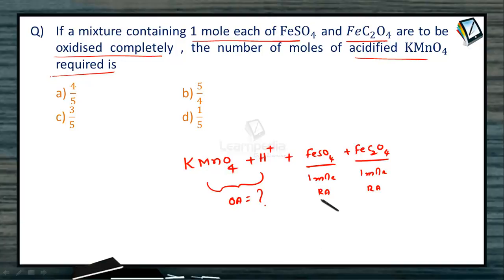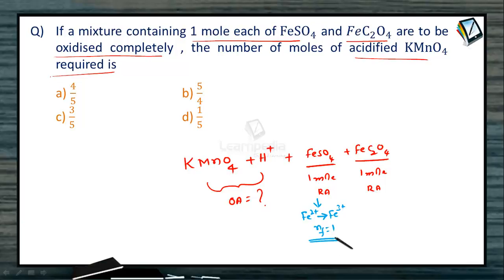For ferrous sulfate, the reducing agent: during the redox reaction, ferrous ion gets oxidized to ferric ion. So what is the N-factor with +2 changing to +3? It is 1. So the N-factor for ferrous sulfate as a reducing agent is 1. That is, one mole of reducing agent is nothing but one equivalent of reducing agent. So the number of equivalents of ferrous sulfate is 1.